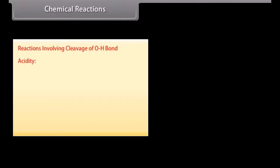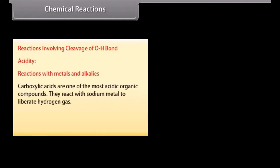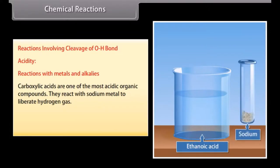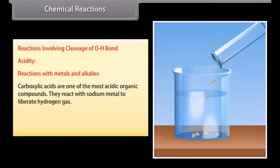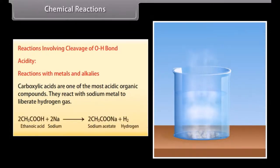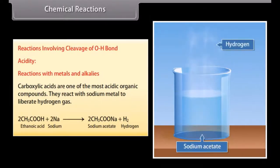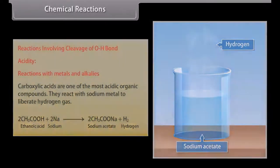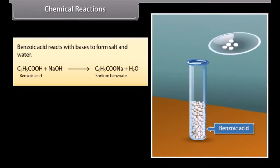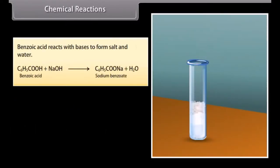Reactions involving cleavage of O-H bond. Acidity: Reactions with metals and alkalies. Carboxylic acids are one of the most acidic organic compounds. They react with sodium metal to liberate hydrogen gas. Sodium metal reacts with ethanoic acid and gives sodium acetate while liberating hydrogen gas. Benzoic acid reacts with bases to form salt and water. Ethanoic acid reacts with carbonates to liberate carbon dioxide gas.